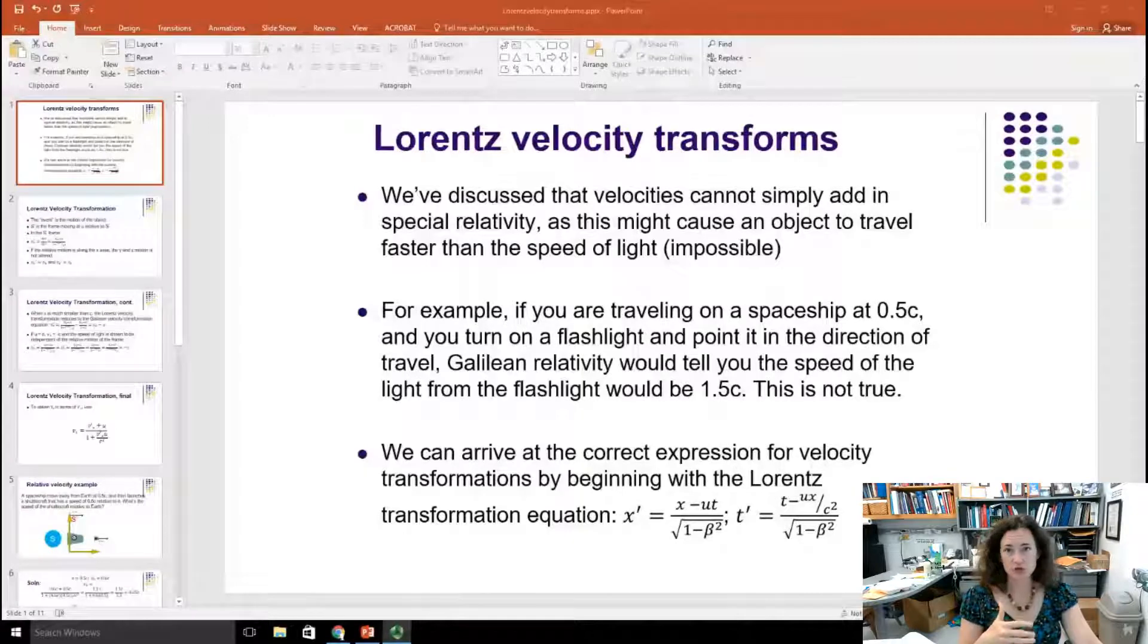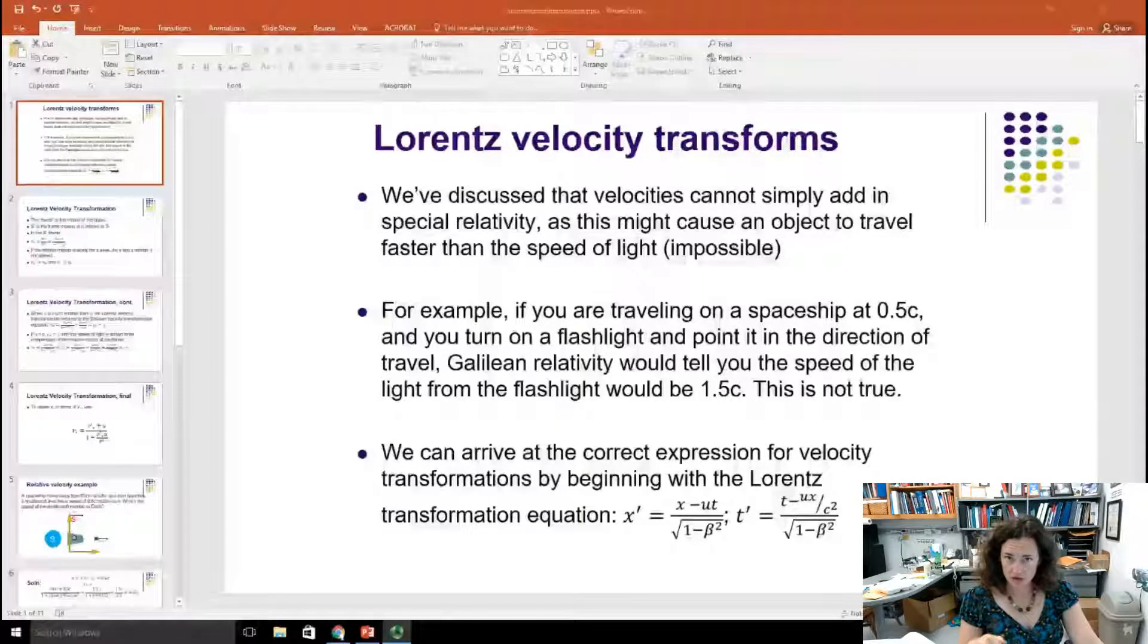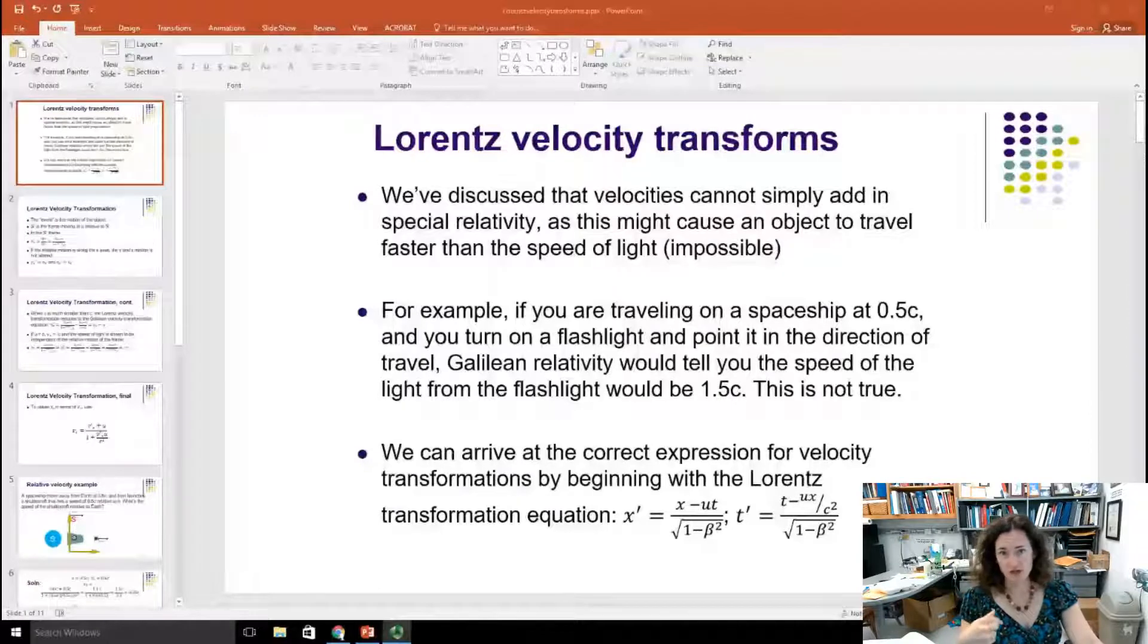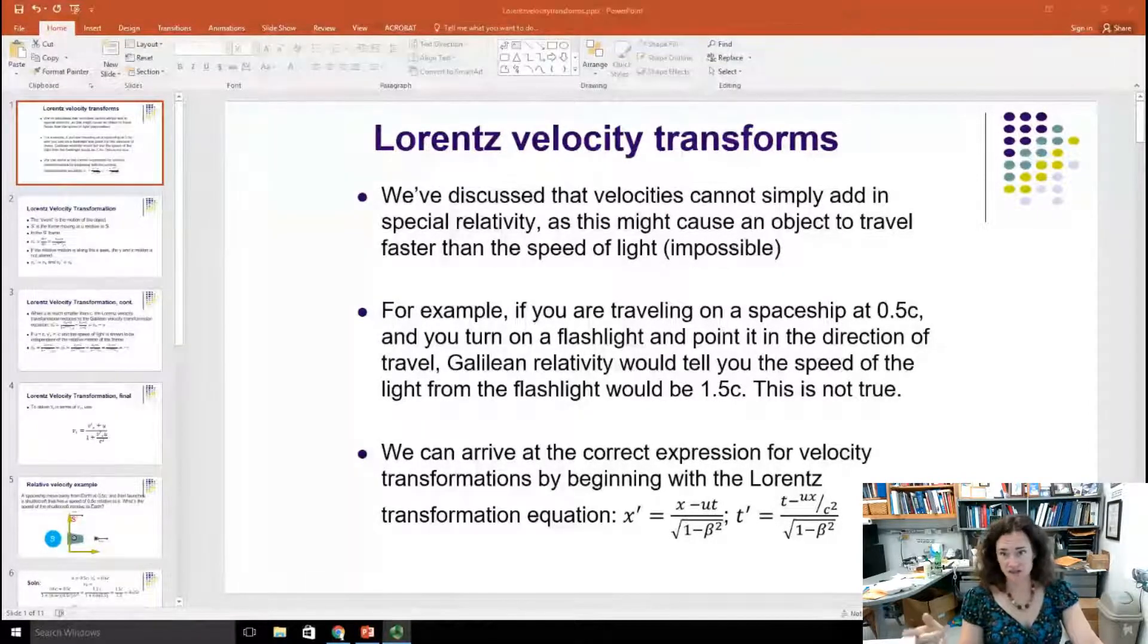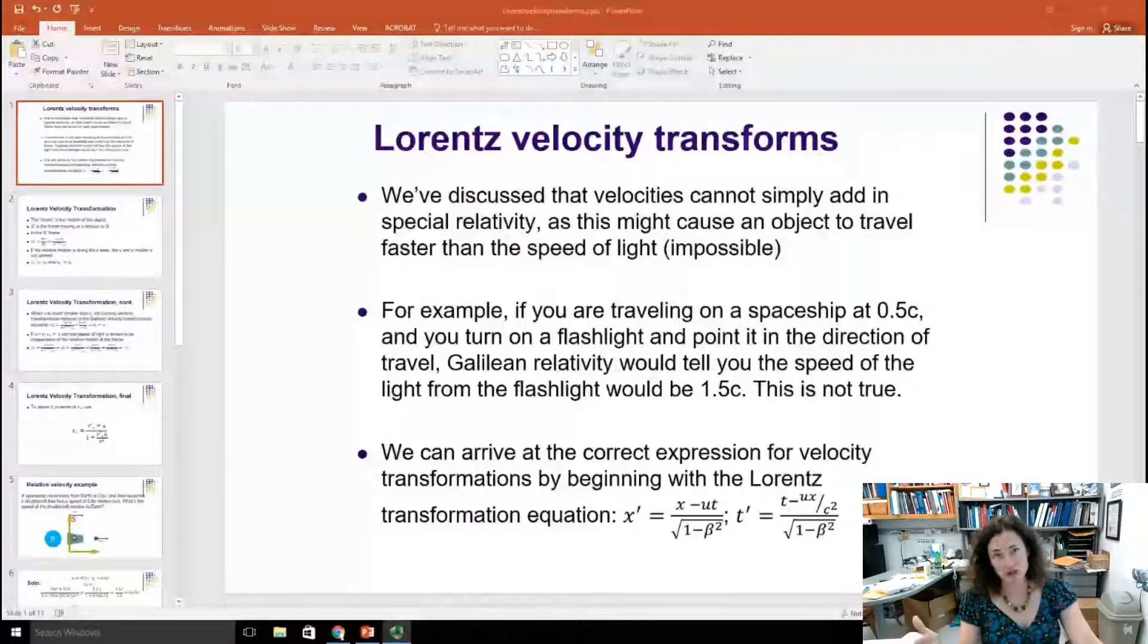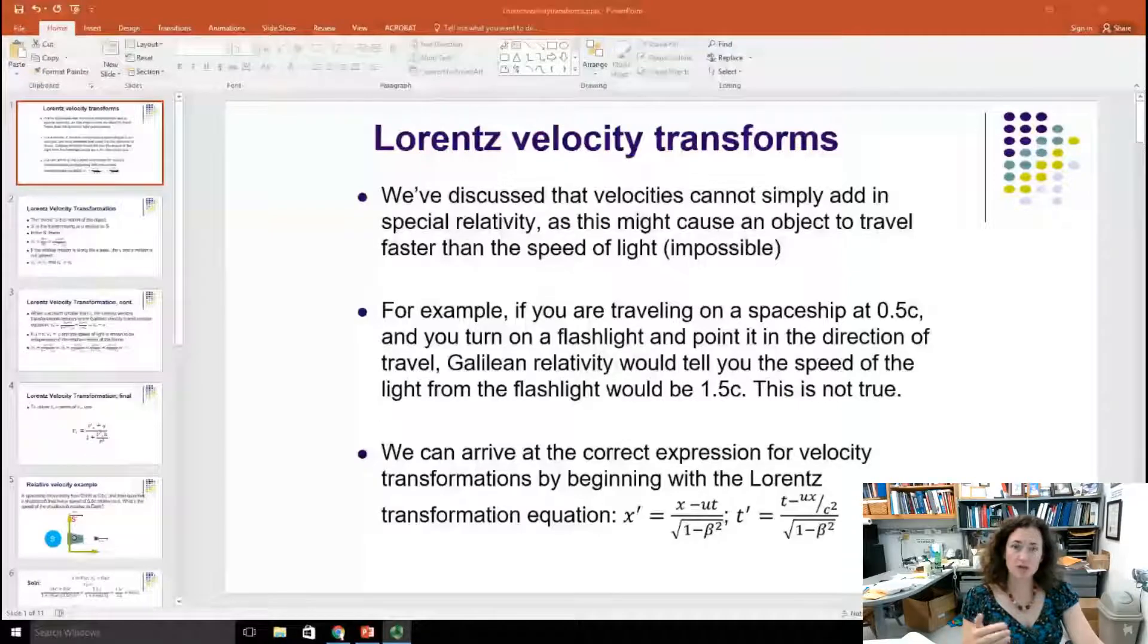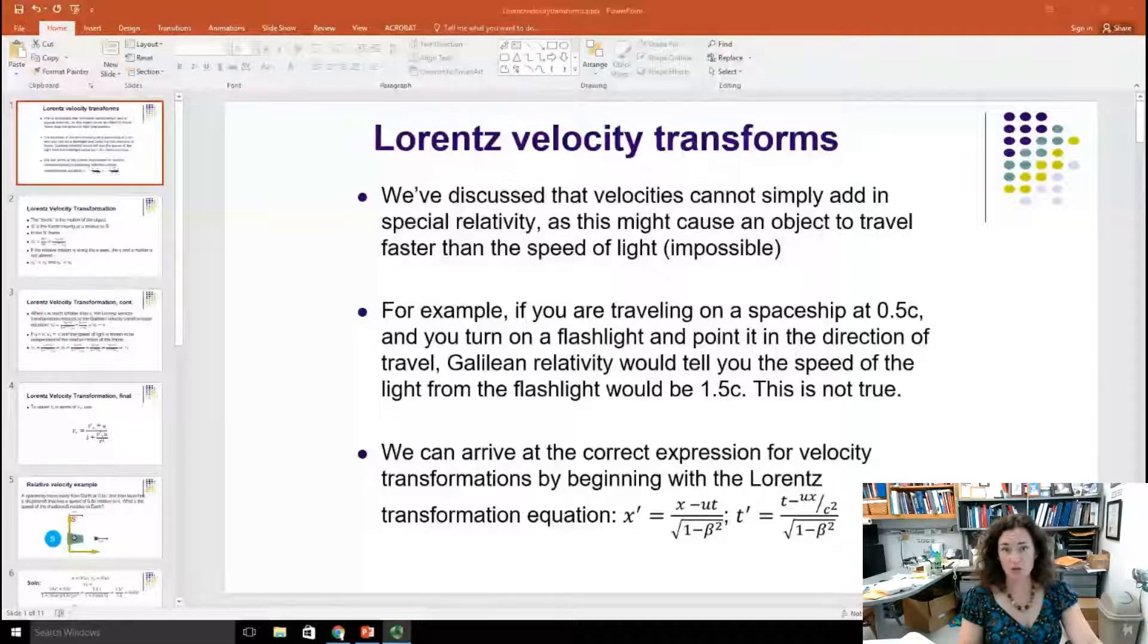According to classical or Galilean relativity, an outsider to your frame, a stationary outsider, would measure the speed of light from your flashlight as one and a half c because they would just straight up add the half c and c. But this is clearly impossible because it violates one of the two postulates of special relativity. So it's not true, it doesn't work that way.